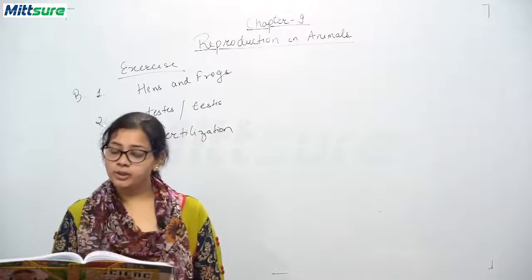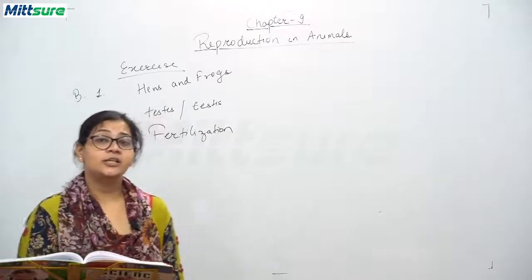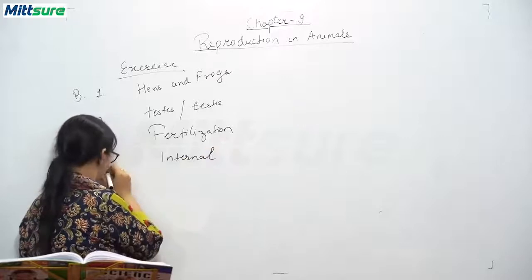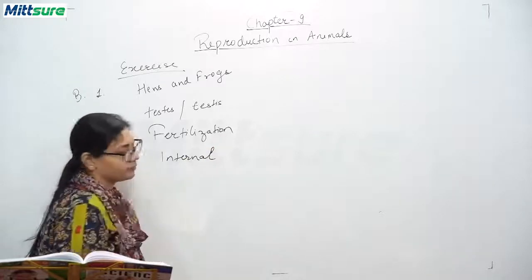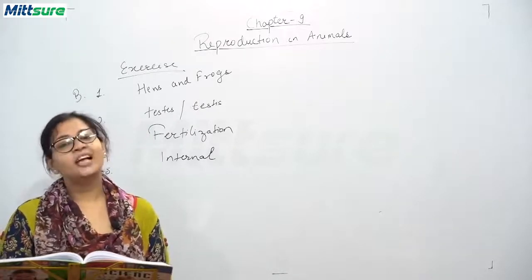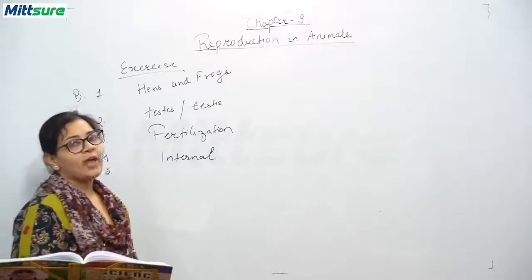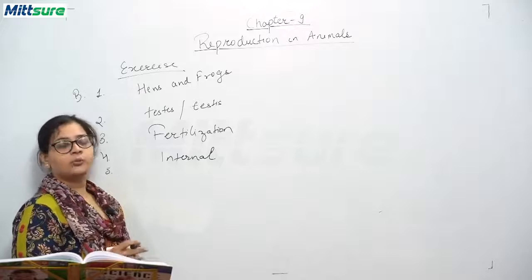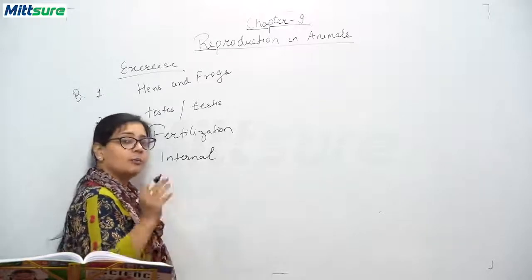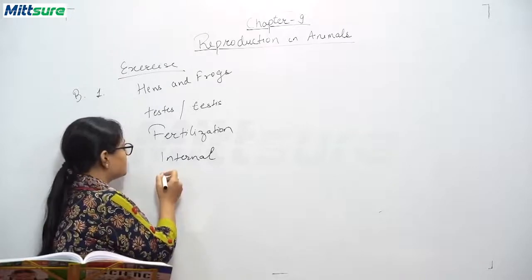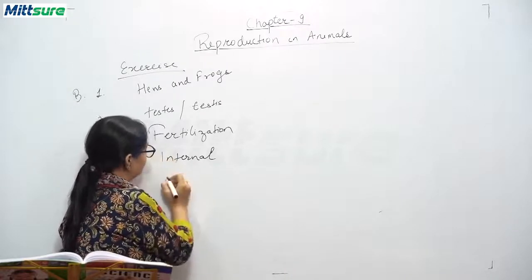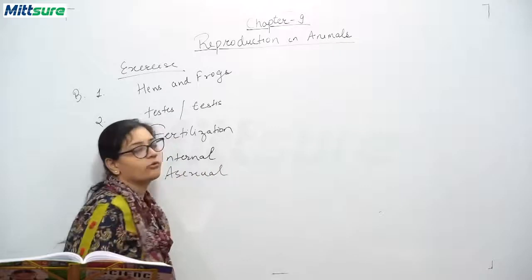Fourth: in humans, fertilization is internal. Fifth: the union of gametes does not take place during blank reproduction. In sexual reproduction — both internal and external fertilization — union of gametes does take place. So, only in asexual reproduction does the union of gametes not take place. The correct answer is asexual reproduction.